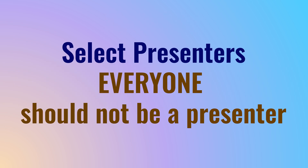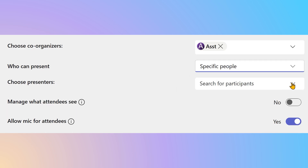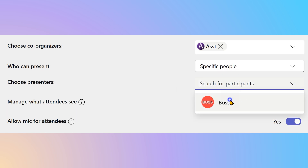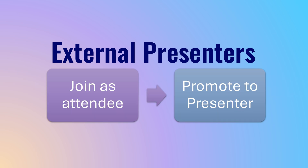Next, configure who can present. Keep the number of presenters to a minimum. If it is internal presenters, select specific people and then select their names. If it is external presenters, just choose only organizers and co-organizers can present. Let the external presenters join during the meeting and then promote them as presenters.